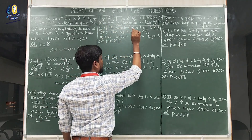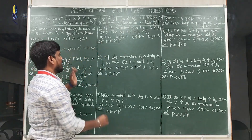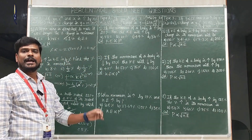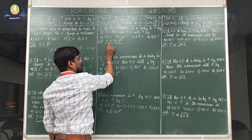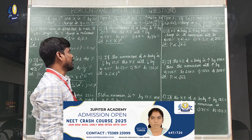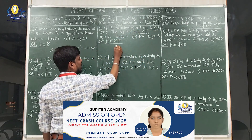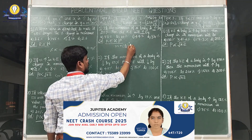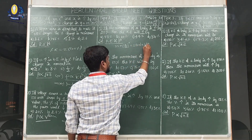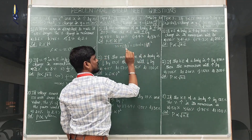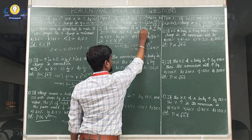First question: if the momentum of a body is increased by 20%, the kinetic energy will increase by? The relation is: kinetic energy is directly proportional to momentum squared (p²). Comparing with y ∝ x², we use the increase formula: 2n + (n/10)². With n = 20: 2×20 + (20/10)² = 40 + 2² = 40 + 4 = 44%. The answer is 44%.